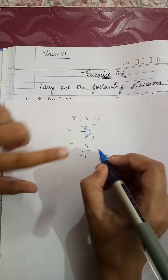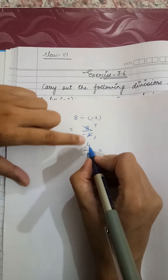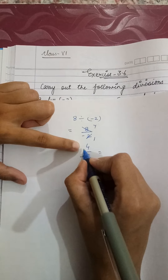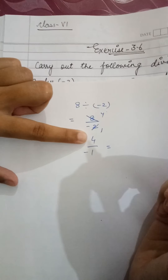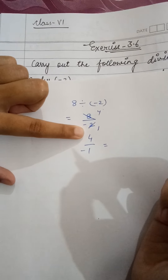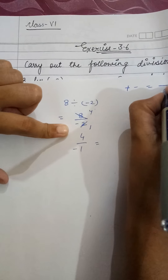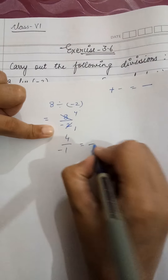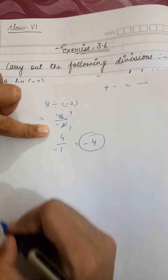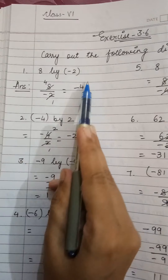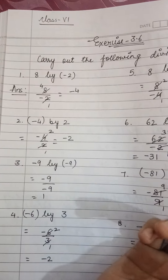Now just tell me one thing — this 4 is positive because no sign is there, and if this is positive and this is minus, what is plus minus? Minus. So the answer is going to be minus 4. Look here, the same answer has come.